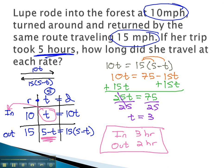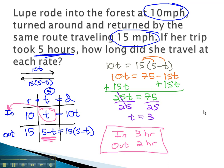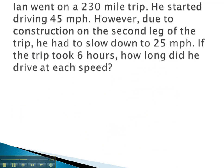Let's look at another example, where we are given the total time, and use that to solve the problem. On this problem, Ian goes on a long 230-mile trip. He goes partway at a fast rate, and the rest at a slow rate.